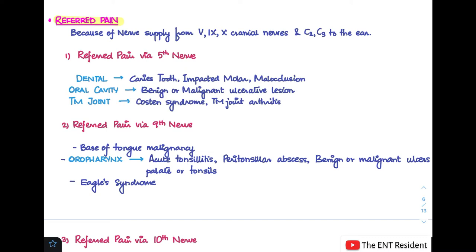First can be referred pain via the 5th cranial nerve or the trigeminal nerve. This involves dental, oral cavity, and TM joint causes. Dental causes can be caries tooth, impacted molar, and malocclusion of teeth. Causes in the oral cavity involve benign or malignant ulcerative lesions. Temporomandibular joint problems involve Costen syndrome and TM joint arthritis. These are all the causes that can cause referred pain to the ear via the 5th cranial nerve.